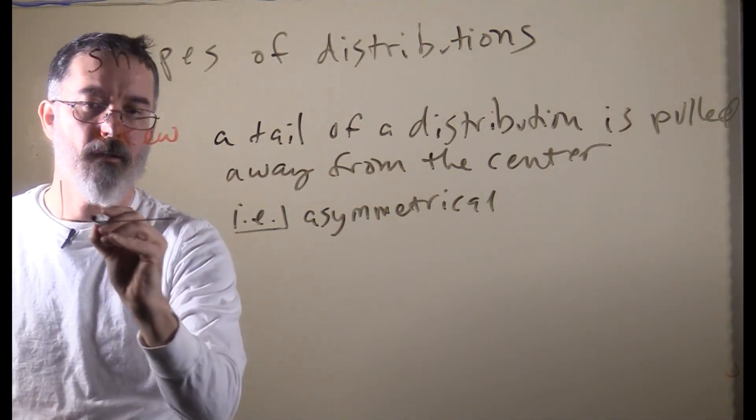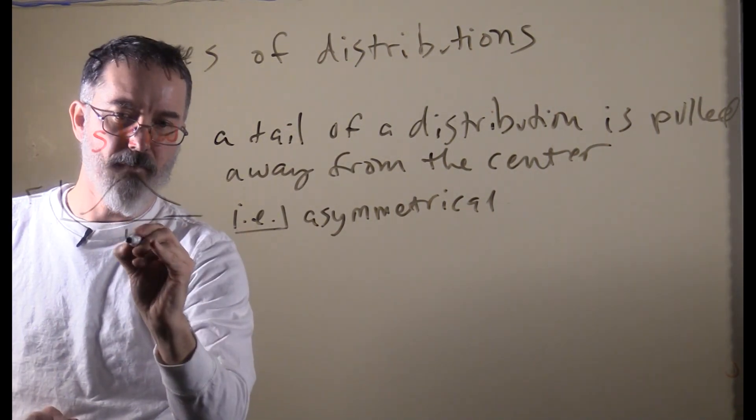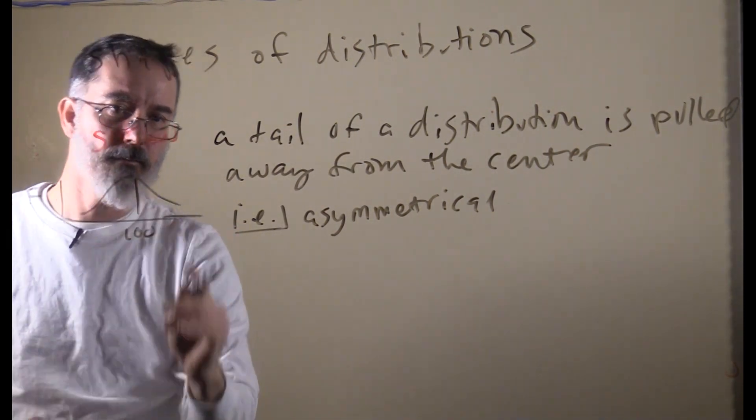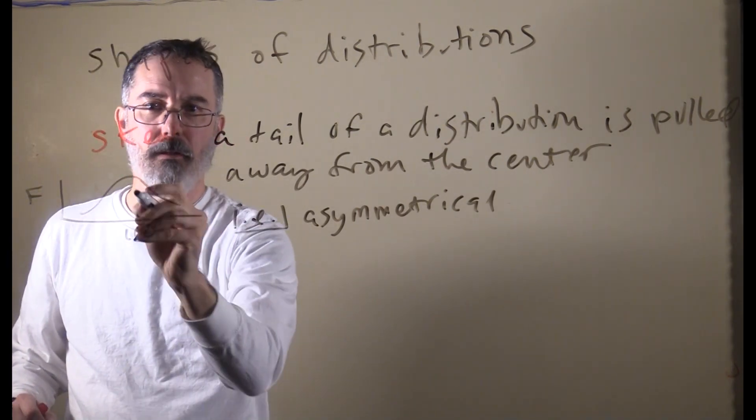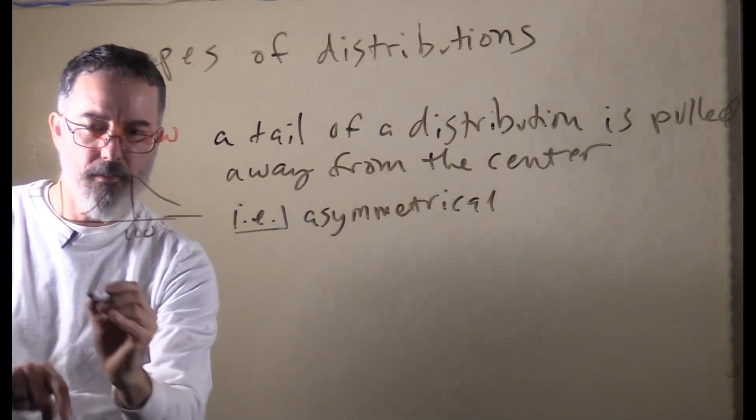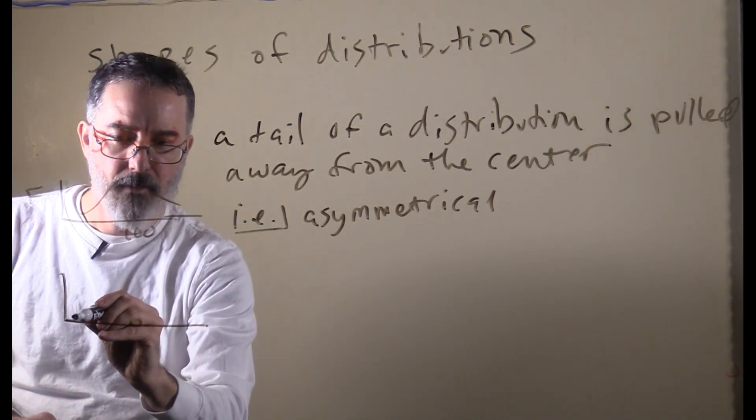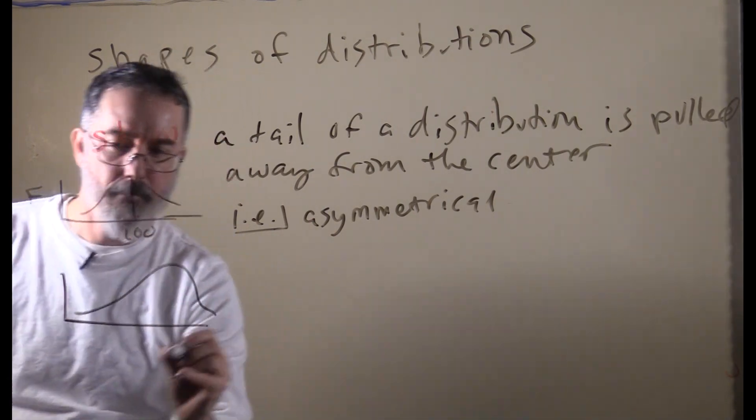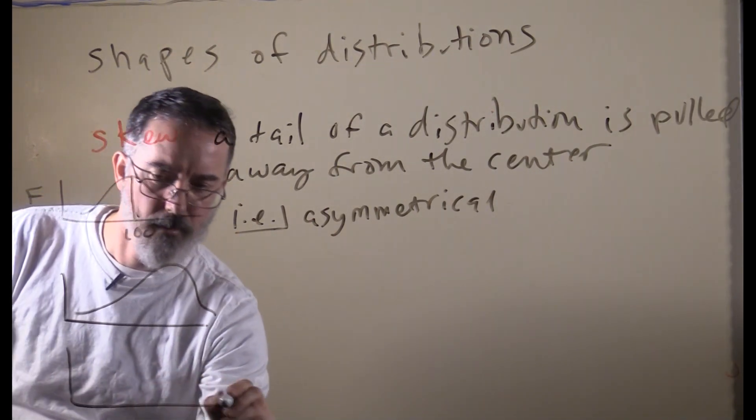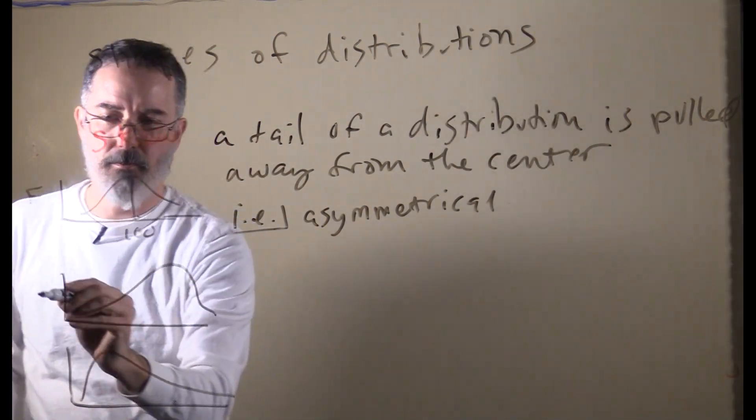If we draw a normal distribution, say IQ, that would be a normal distribution with the mean in the middle. You could have a skewed distribution that looked like that, or you could have a different one that looked like that. Those are the two kinds of skewed distributions.